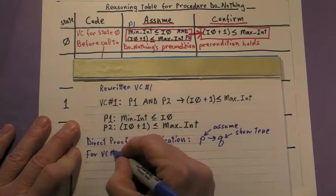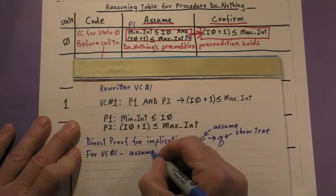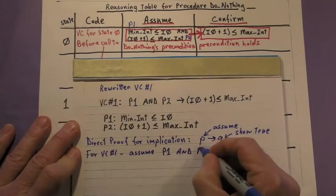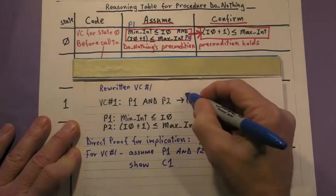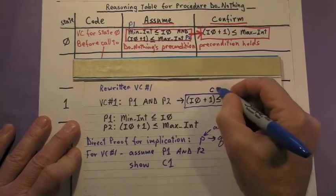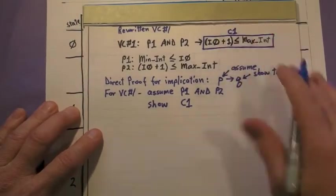For VC number 1, we assume both premises P1 and P2, and we must show the conclusion is true, which we'll label C1.